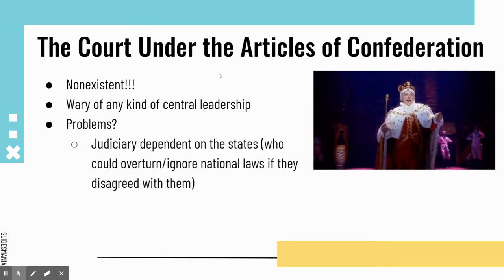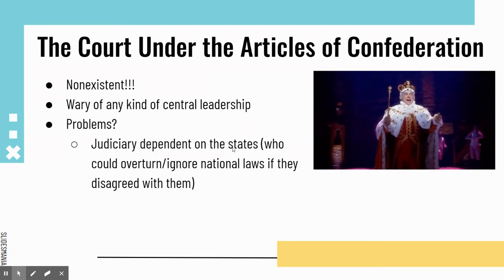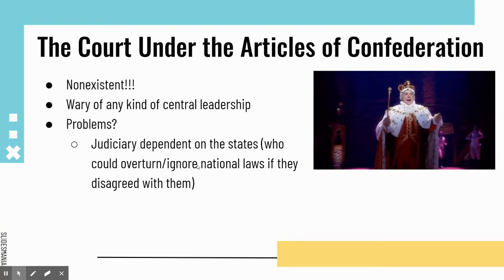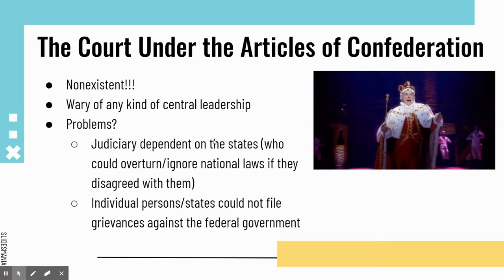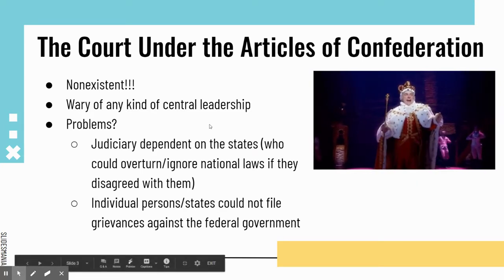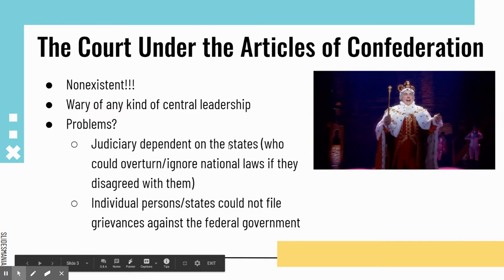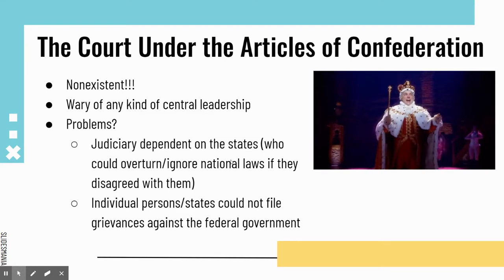Because we did not have a federal judicial branch, the judiciary was dependent on the states. Each state had their own judicial system. And because there was no national one, states could overturn and ignore national laws if they disagreed with them. Individual persons and states also could not file grievances against the federal government. So as you can see, there's not a lot of consistency and no way to address those grievances. States were definitely ignoring national laws because they had the most power.